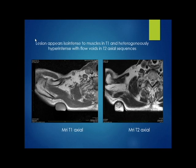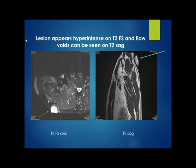On MRI, the lesion appears iso-intense to muscles in T1 axial and heterogeneously hyper-intense with flow voids in T2 axial sequences. The lesion appears hyper-intense on T2 fat sat images and flow voids can be seen on T2 sagittal images.